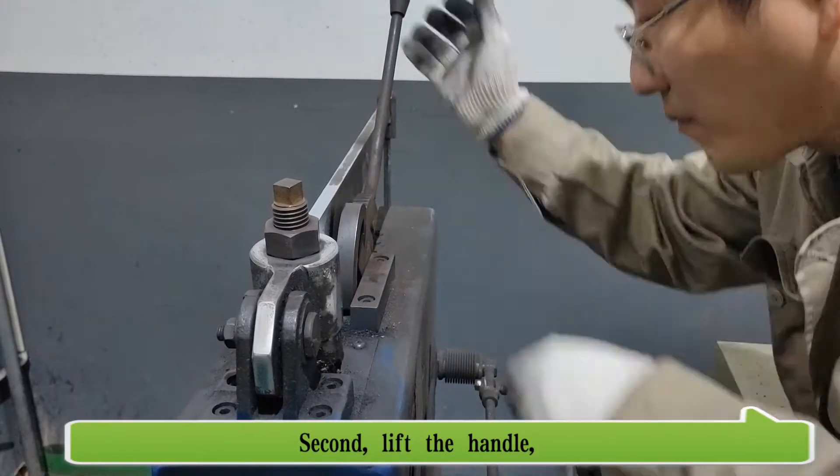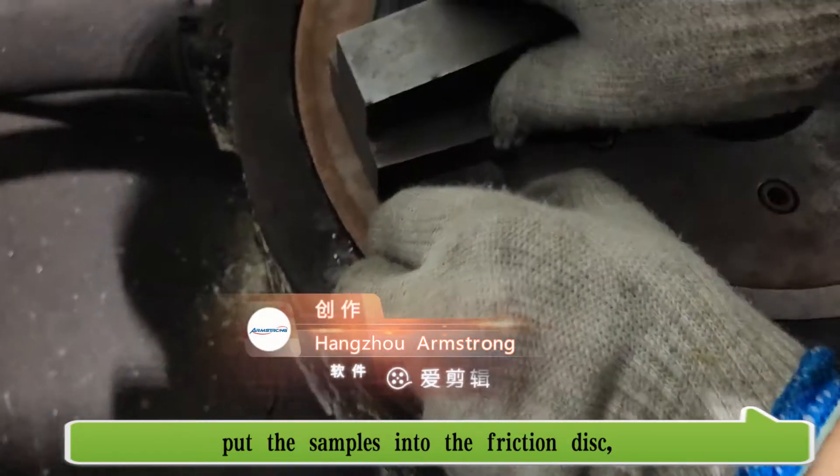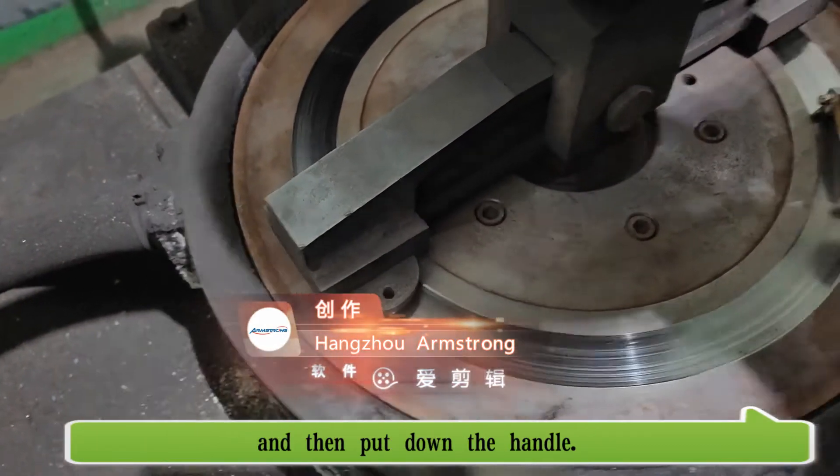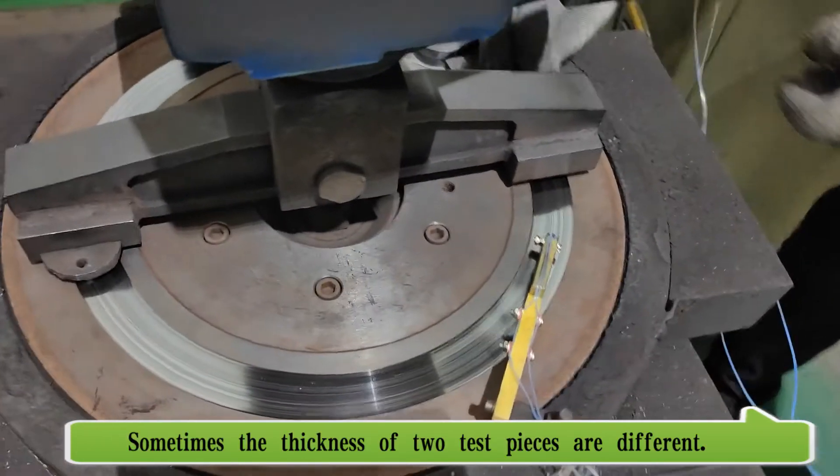Second, lift the handle, put the samples into the friction disk, and then put down the handle.